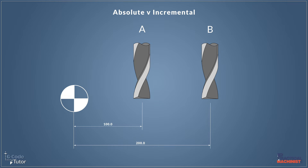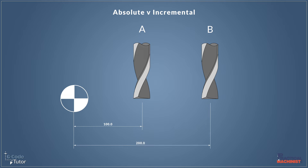So that's absolute. But if we're in incremental we would move it only 100 millimetres. This is because all dimensions in incremental come from the last known position of the tool. So in absolute all dimensions come from the datum position, and in incremental all positions come from the last known position of the tool.